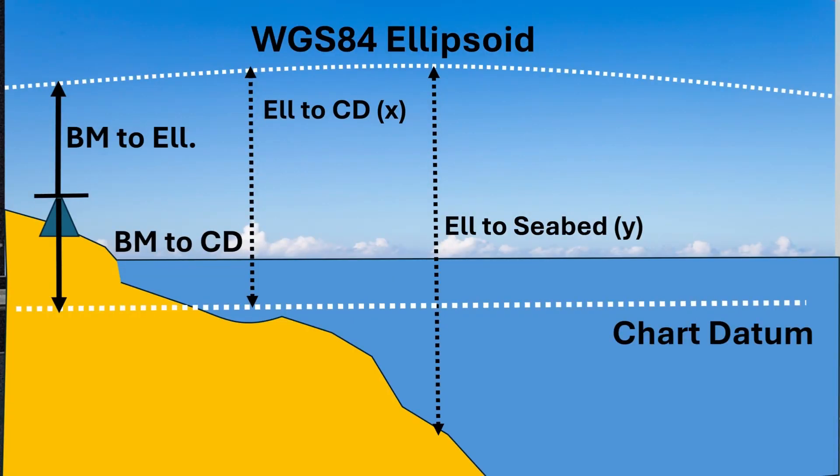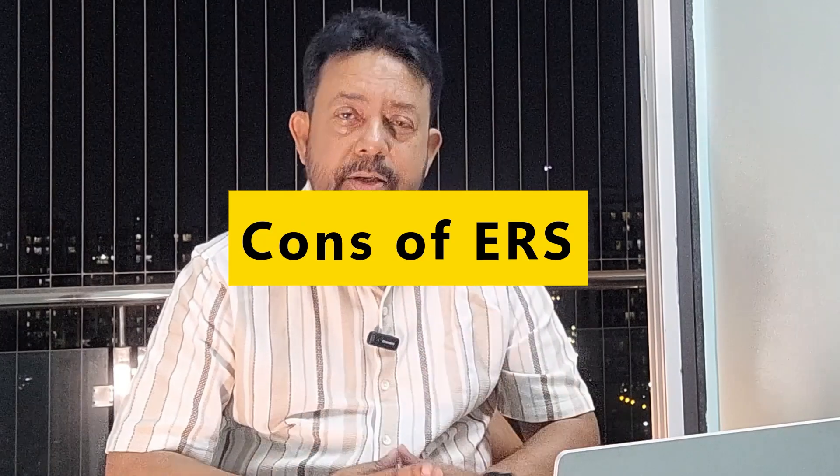Now for the cons of ERS. For a mariner wanting to plan a route or enter a tide-dependent harbor, it can be a major challenge until the separation model for that particular harbor is available. That separation model refers to the local chart datum to ellipsoidal separation. Secondly, we are completely dependent on the accuracy of the GNSS data, especially the vertical component. Achieving highly accurate GNSS vertical data can be very challenging due to satellite geometry, atmospheric conditions, or scintillation effects — which is crucial when entering or exiting a port. Thirdly, investment in high-precision GNSS systems and specialized augmentation systems could be cost-prohibitive.